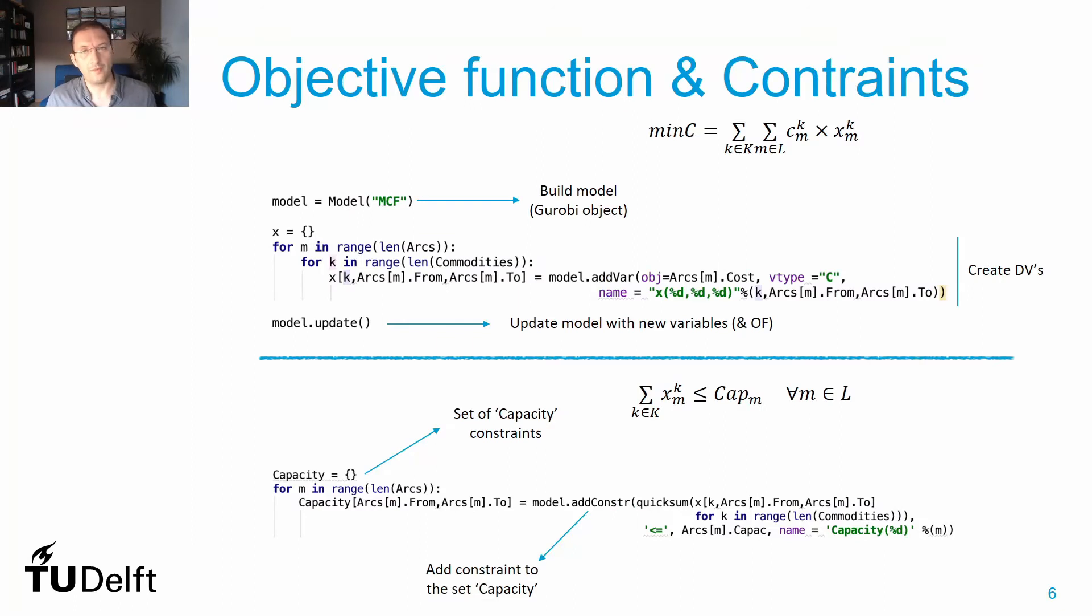Once I do have that, I'm ready to start formulating my optimization model. I'll start with the objective function, but to do that I have first to build my model. I'll call it MCF—you can call it whatever you want—and now Gurobi knows that there is an object called model.